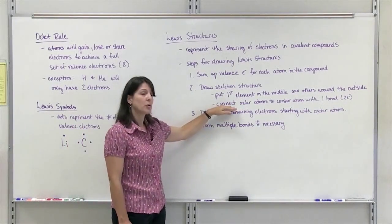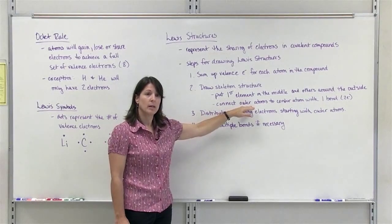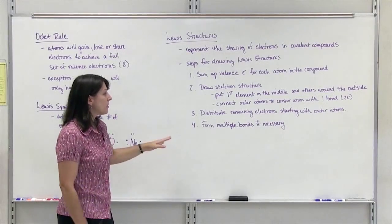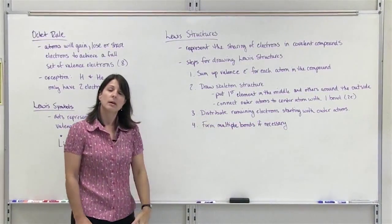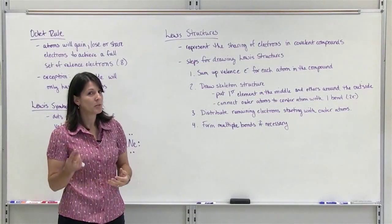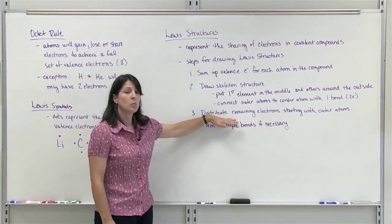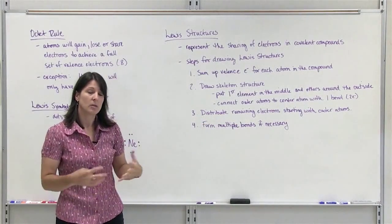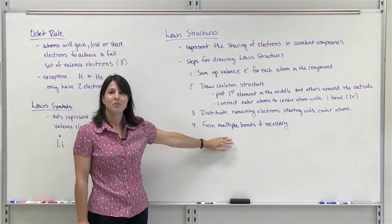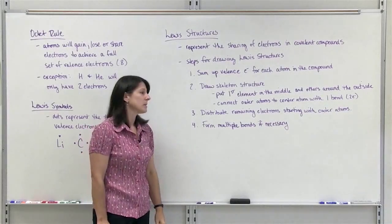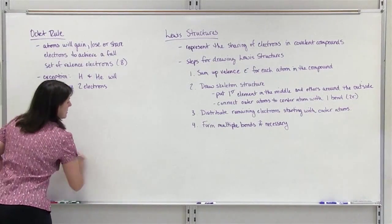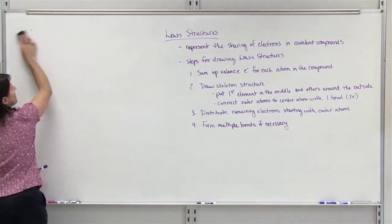Once you have that drawn, you're going to connect all of your outer elements to the center atom with a line, which represents a bond. Then we have to distribute our remaining electrons so that everybody gets their full set of 8, except for hydrogen, which is only going to have 2. At that point, we'll check and make sure that everybody has their octet. If not, we go to step 4, and that's where we may have to make multiple bonds. So we're going to do a few examples and draw some Lewis structures for a few different compounds.